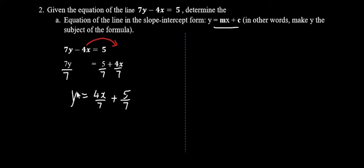And so we have the equation of the line, y equals 4x over 7 plus 5 over 7. Part b is to identify the gradient. The gradient will be the coefficient of x once we have the equation in the form of y equals mx plus c.